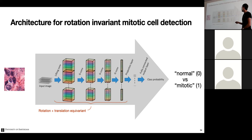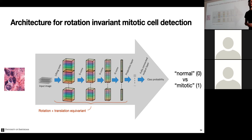The key advantage of group equivariance is weight sharing over all these transformations and defining features in terms of relative transformations. That's the most important thing: stability to transformations via weight sharing. The network ends with a prediction layer, which could be max pooling, mean pooling, or some permutation-invariant operation over the rotation axis.